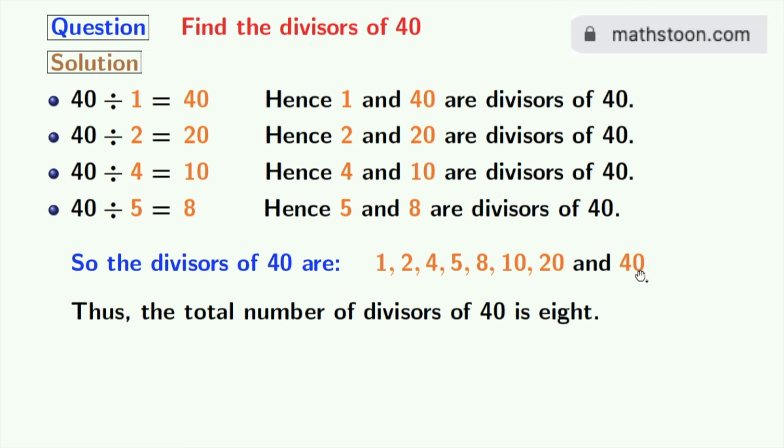Now if we look at these divisors, we can see that 2 and 5 among these numbers are prime numbers. Because these two numbers do not have any divisor other than 1 and that number itself. So the prime divisors of 40 are 2 and 5.